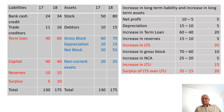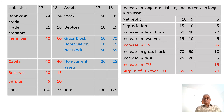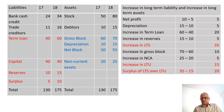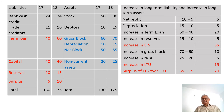On the uses side, gross block increased from 60 to 70 — use of 10. Note: always take gross block on the uses side since depreciation was already taken on the sources side. Non-current assets increased from 20 to 25 — increase in NCA of 5. Total long-term uses: 15. With sources at 35 and uses at 15, there is a surplus of LTS over LTU of 20.